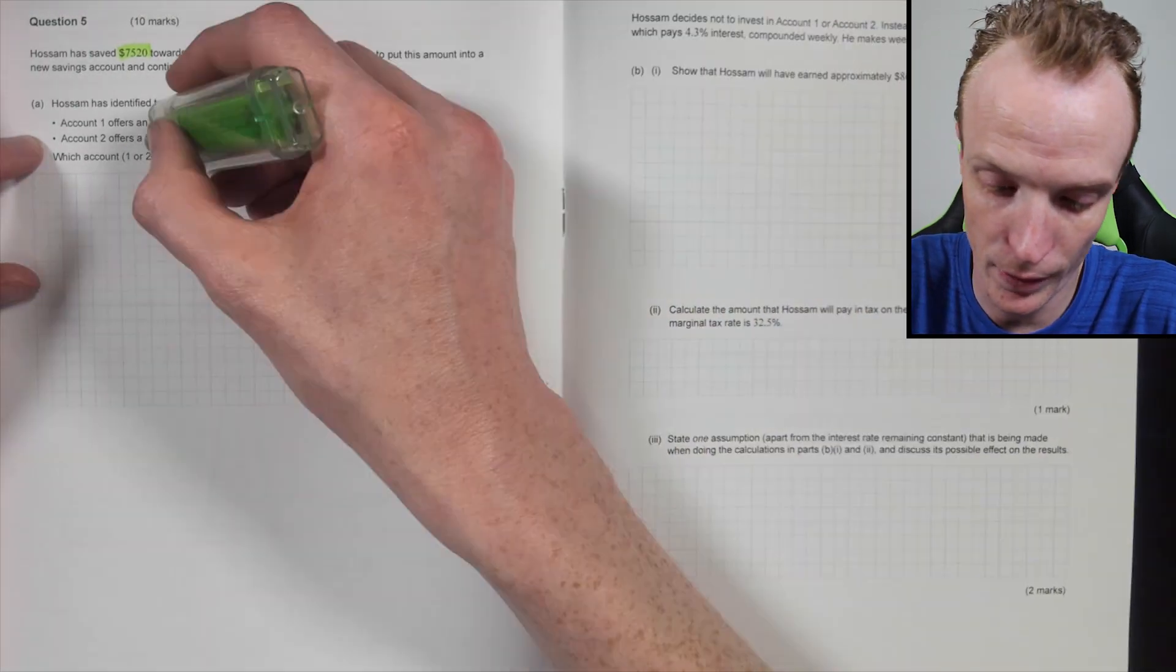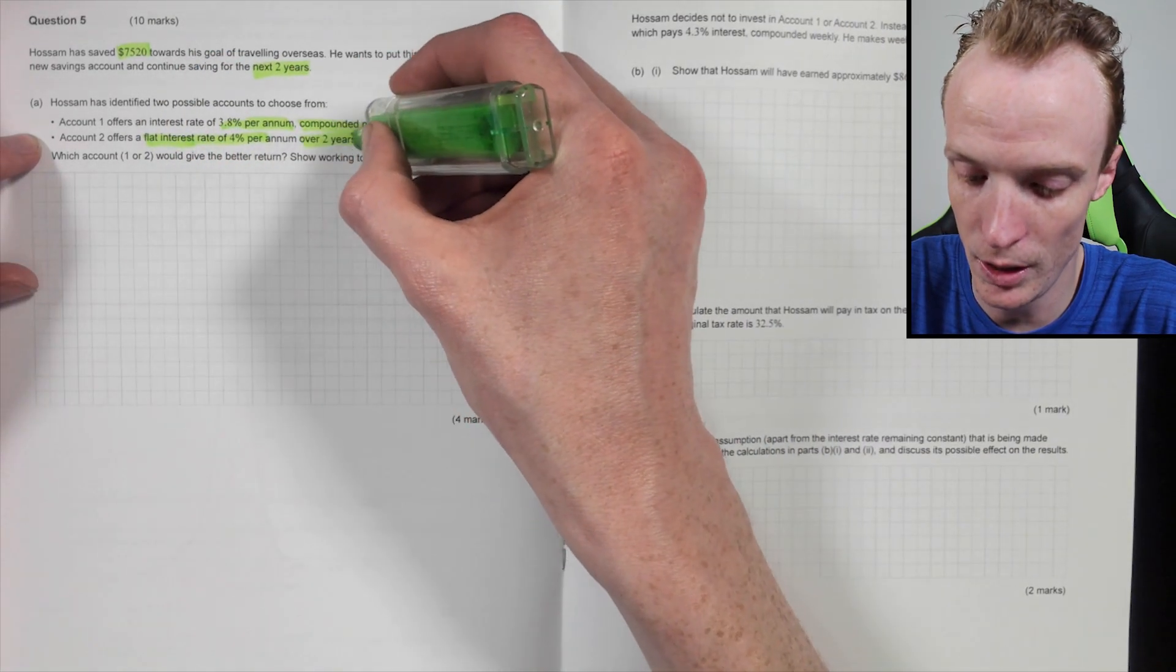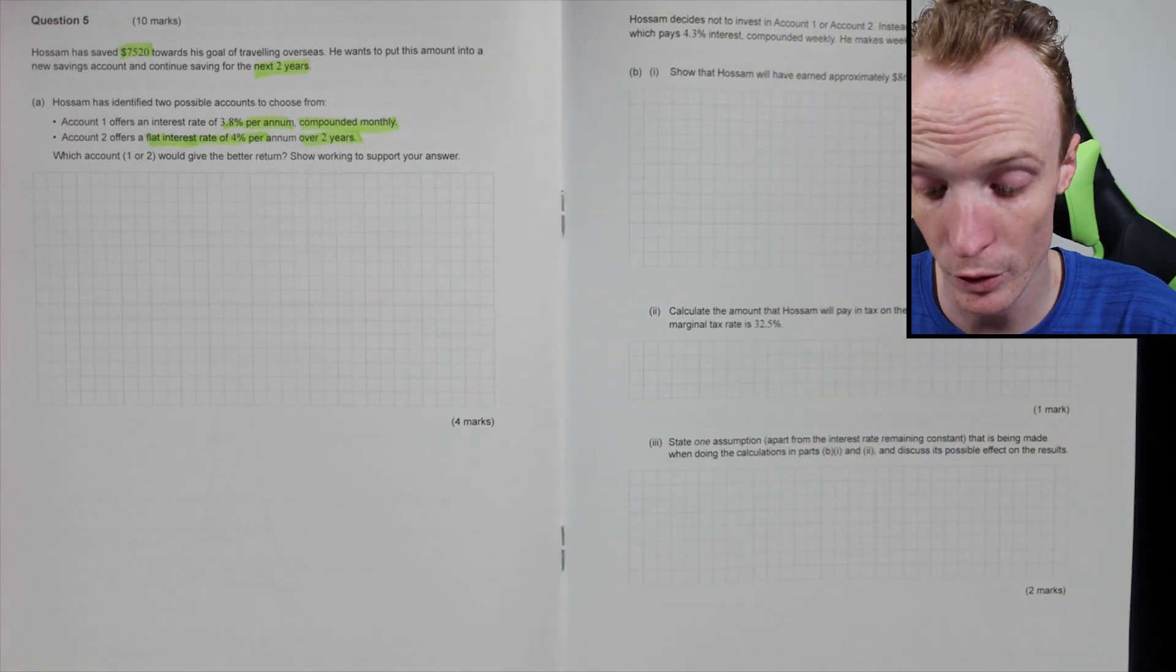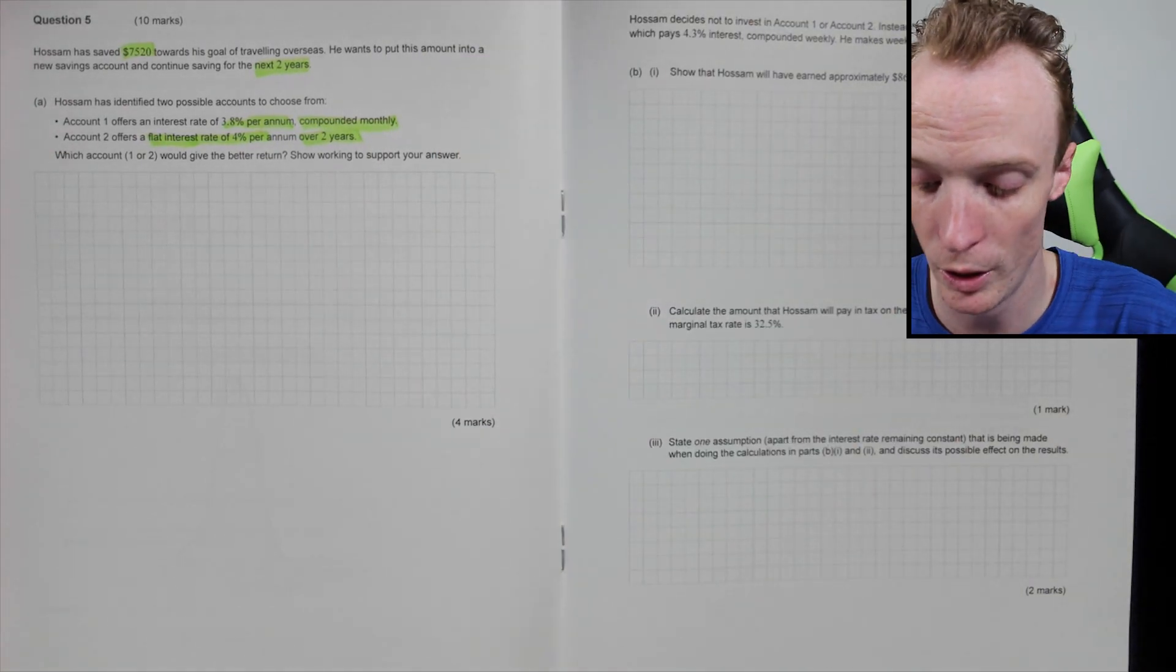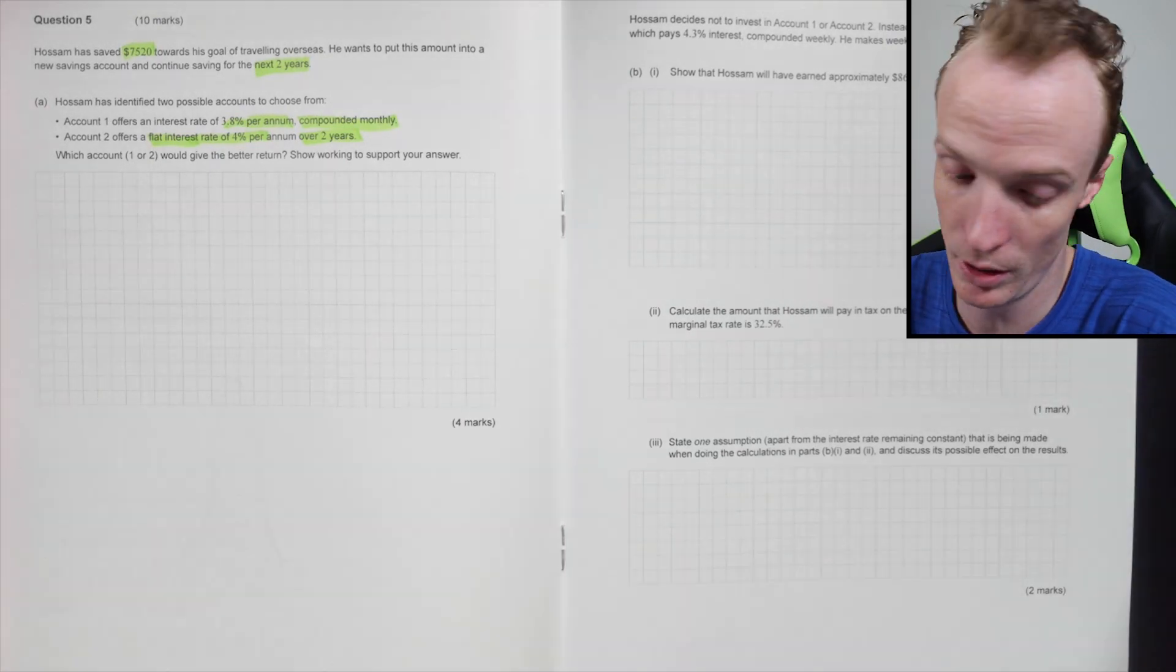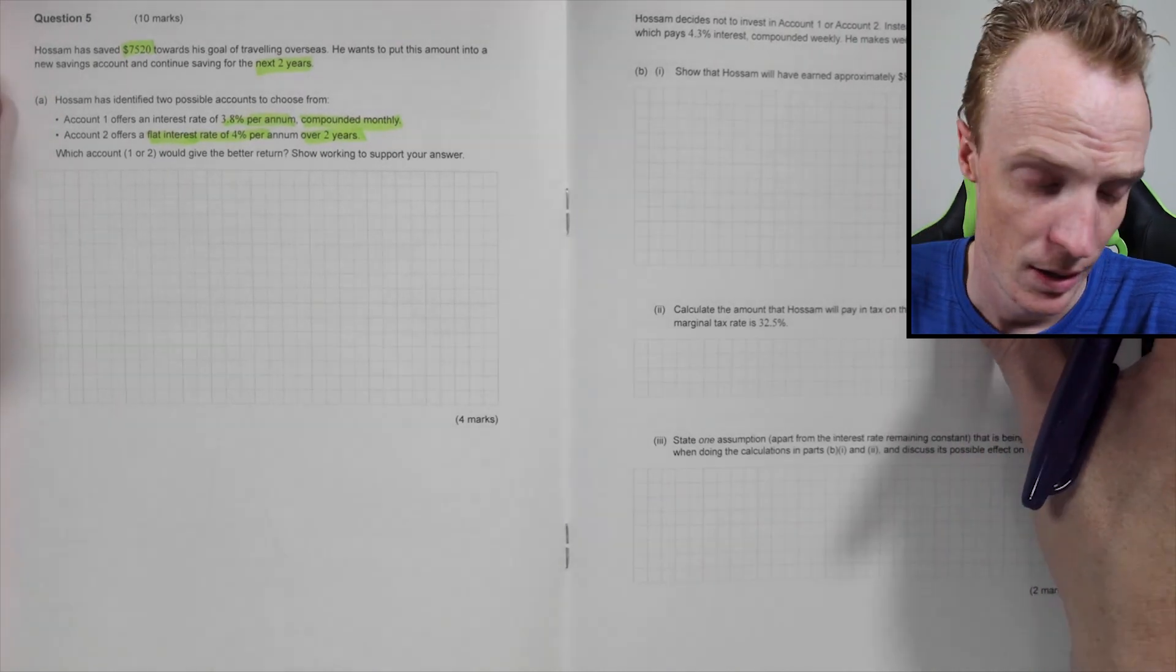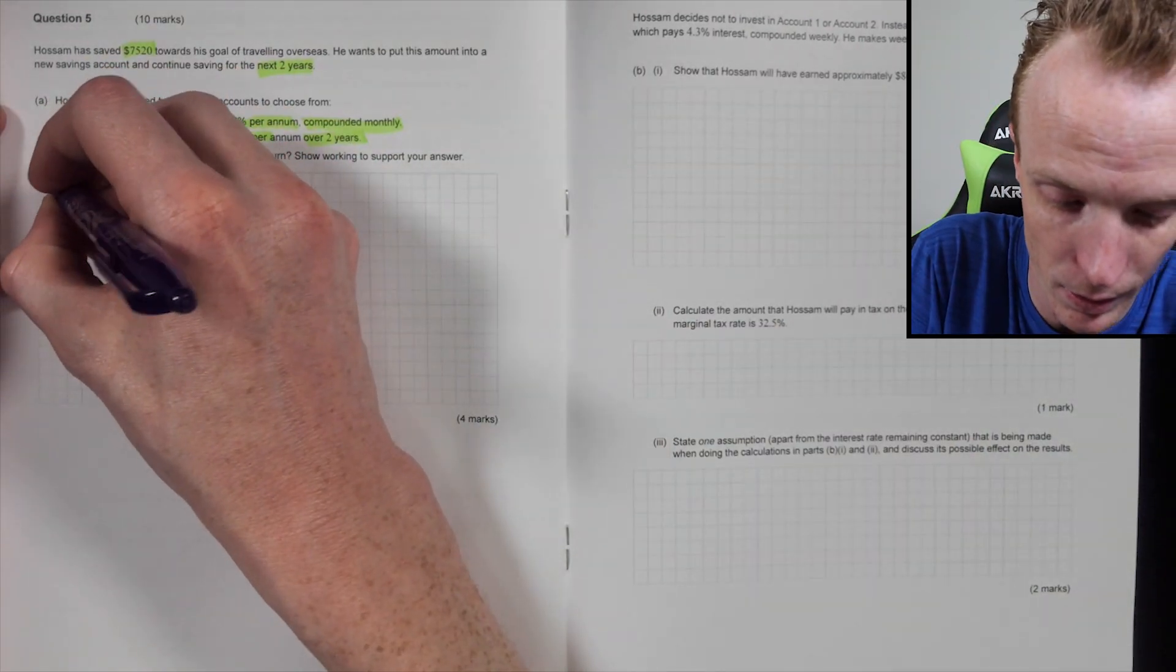Account two is a flat interest. Well, that's important. Of 4% per annum over two years. Which account one or two would give a better return? Show working to support your answer. I think the easiest way to do this would be just to calculate how much money you're going to have after two years. So let's do that. Account one.